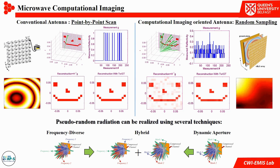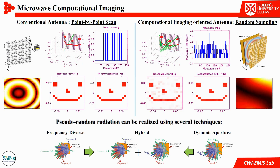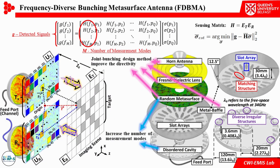This method significantly enhances imaging performance while reducing hardware complexity. However, metasurface-based imaging is limited by the number of measurement modes and the SNR of detected signals. To overcome these limitations, we combine a disorder cavity with an optimized high-dispersion metasurface to increase the number of measurement modes.